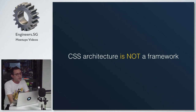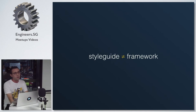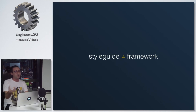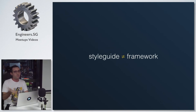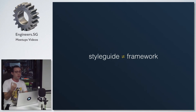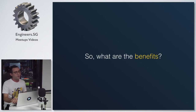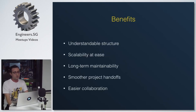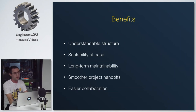CSS architecture is not really a framework — I'd call it a style guide. Frameworks have a lot of predefined styles you either use or override, which creates a lot of unneeded code. By setting up a good architecture at the very beginning of a project, you'll save a lot of time and effort maintaining your code. The benefits include a more understandable structure, ability to scale at ease, long-term maintainability, smoother project handoffs, and easier collaboration.